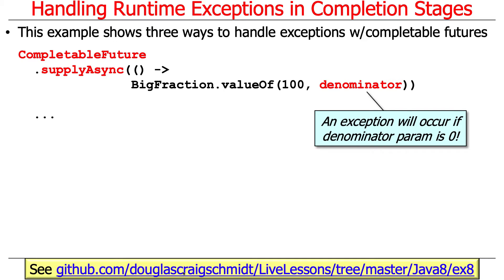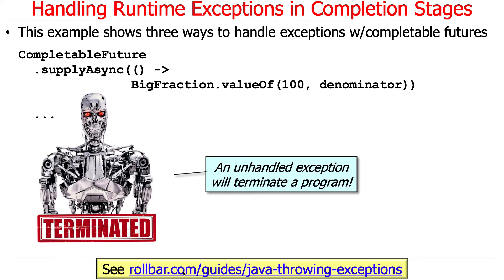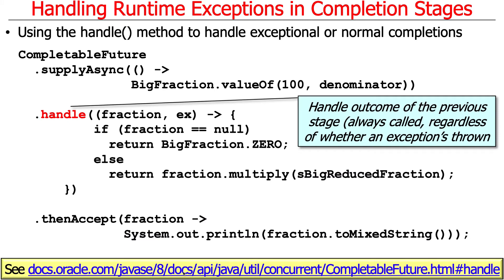This example is going to show three different ways to handle exceptions with CompletableFutures. The scenario is we're going to create a BigFraction with a numerator of 100 and a denominator that's a variable. If that variable is non-zero, we're fine. If it's zero, an exception is going to be thrown because we'd be creating a BigFraction with a denominator of zero — a divide by zero exception. If an exception is raised and nobody handles it, that will terminate the program, which is a bad thing. So we have to figure out some way of handling exceptions that arise in these completion stages.